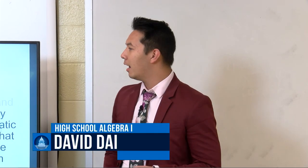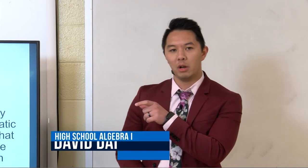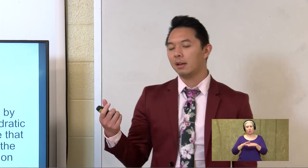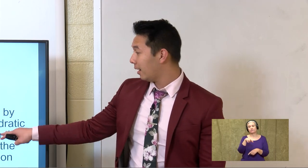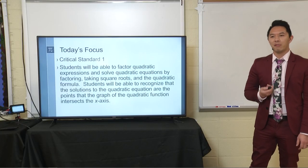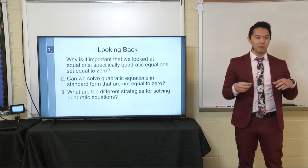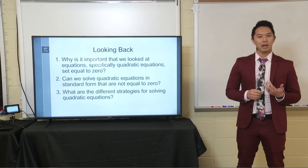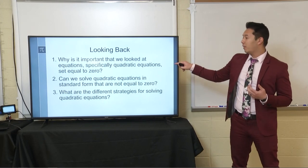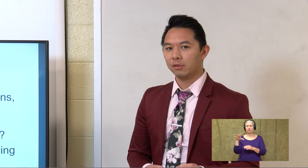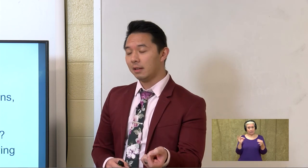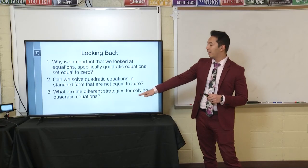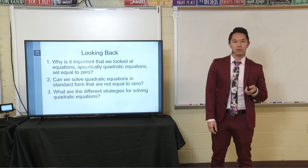For those of you that were with us last week, we focused on critical standard number one. Today we're going to continue focusing our attention on this critical standard. Last week we spent a lot of time thinking about factoring quadratic trinomials, and we're going to take a look at the rest of the standard today. My focus is going to be centered around questions I posed at the end of last week's lesson: why it's important that we looked at quadratic equations set equal to zero, whether we can solve these equations in standard form if they were not equal to zero, and what are the different strategies for solving quadratic equations.